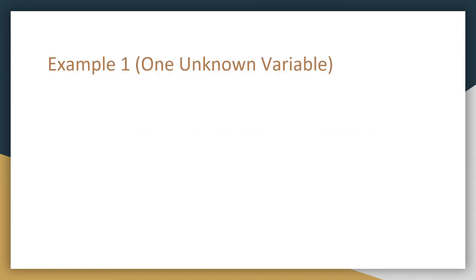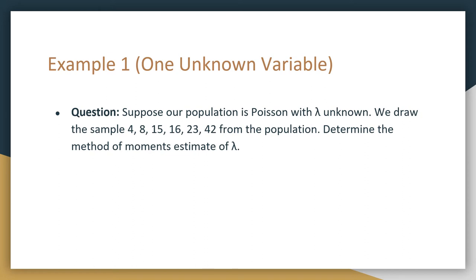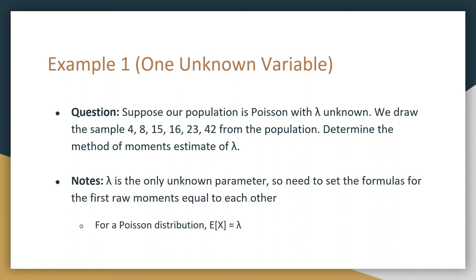Let's start with example one, which has one unknown variable. Suppose our population is Poisson with lambda unknown. We draw the sample: 4, 8, 15, 16, 23, and 42, and we are asked to determine the method of moments estimate for lambda. Since lambda is the only unknown parameter, we need to set the formula for the first raw moment equal to each other. From the distribution, the expectation of X is equal to lambda.